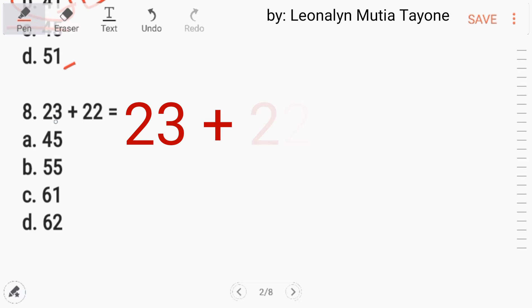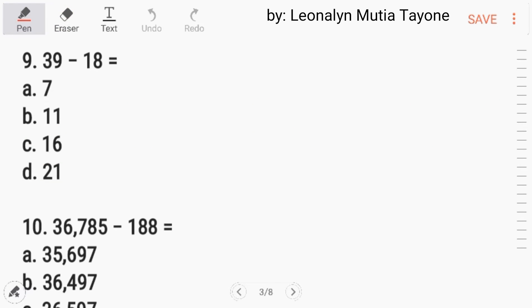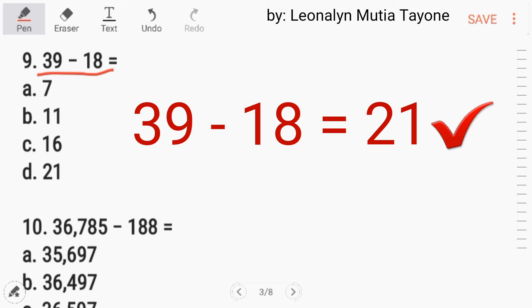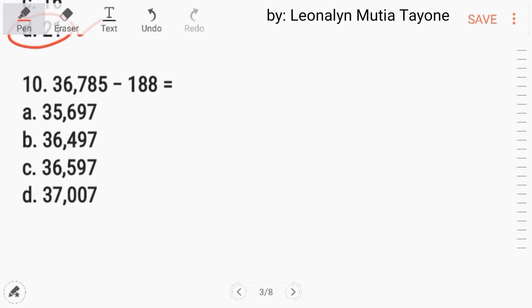Number 8. 23 plus 22. This is basic addition. Again, this is 45. So the answer is letter A. Number 9. 39 minus 18. This is simple subtraction. So the answer is 21. 9 minus 8, 1 lang naman. 3 minus 1 is 2. So, 21.